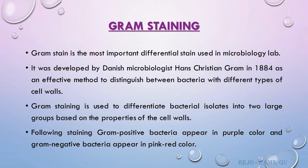Gram staining is used to differentiate bacterial isolates into two large groups based on the properties of their cell walls following staining. Gram positive bacteria appear in purple color and gram negative bacteria appear in pink-red color.